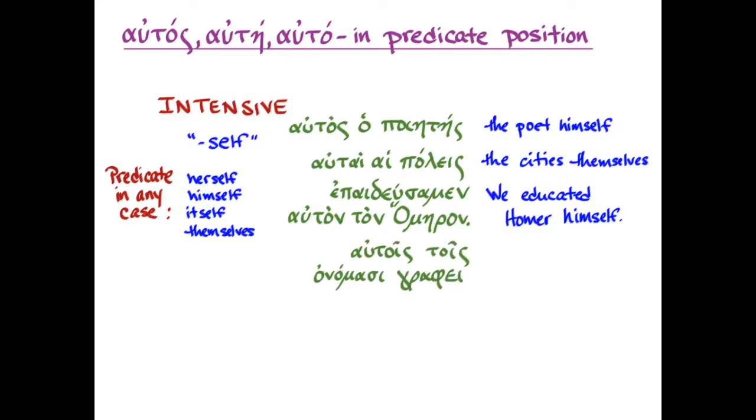One more example here, autois-tois-onomacy graphe. Here we've got autois, and it's modifying tois-onomacy. It's in the same case number and gender, dative, neuter, plural. And it is going to intensify the term names. So that could be translated, she writes with the names themselves. So you can use autos as an intensifier in predicate position in any case.